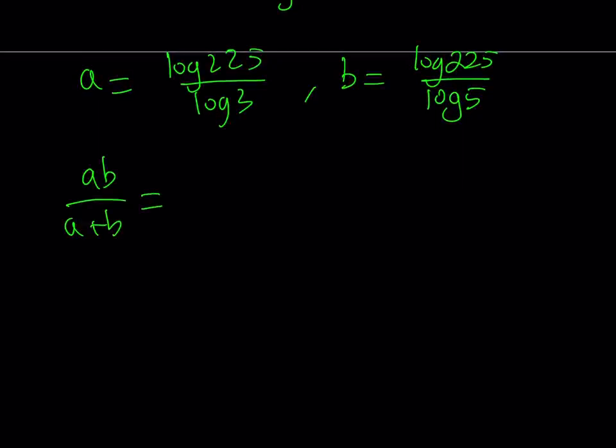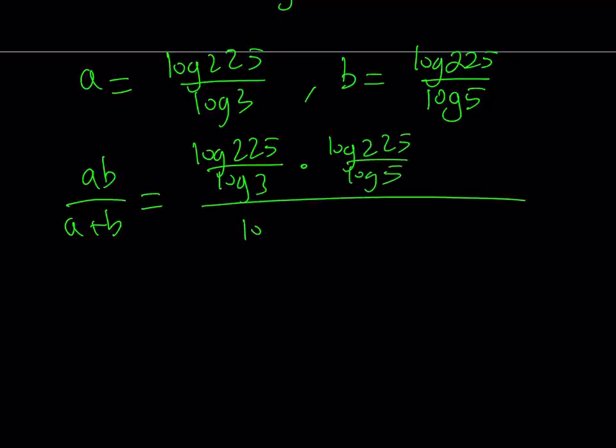Now, ab means a times b. So we're going to multiply these expressions. Log 225 over log 3 multiply by log 225 over log 5. And at the bottom, we're supposed to add them. Log 225 over log 3 plus log 225 over log 5.